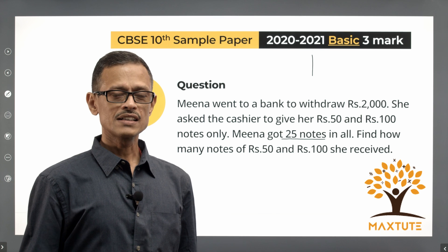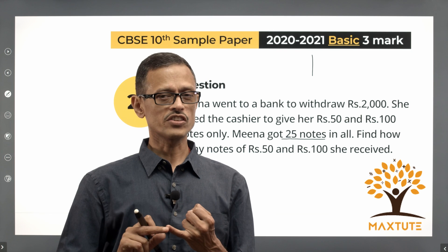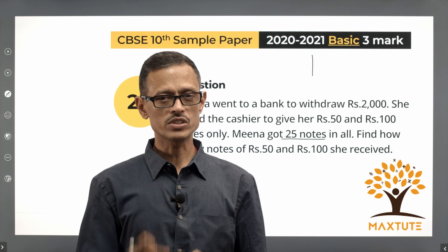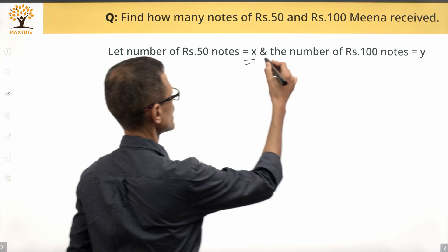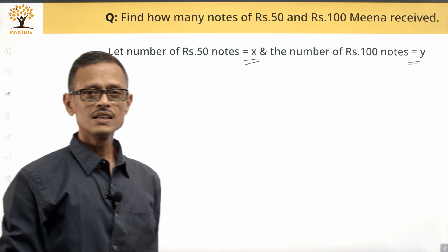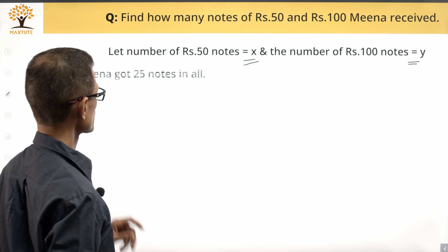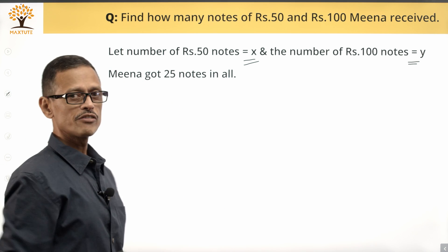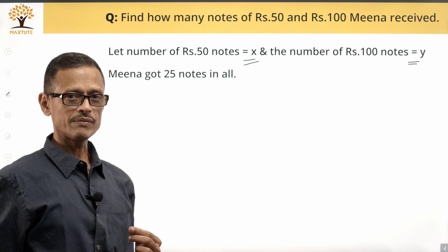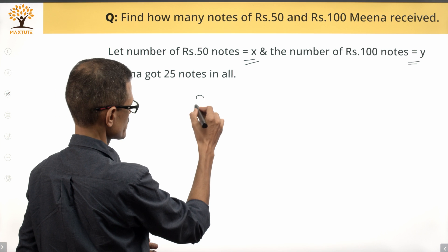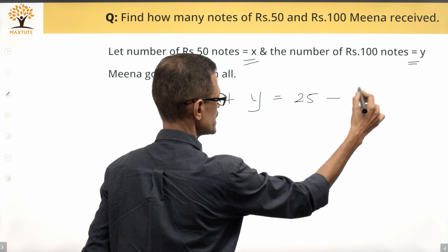Step one — let's assign variables. I'm going to assign a variable for the number of 50 rupee notes she got and another for the number of 100 rupee notes. Let x equal the number of 50 rupee notes and y equal the number of 100 rupee notes. Since the total number of notes she received is 25, we get x plus y equals 25. This is equation 1.